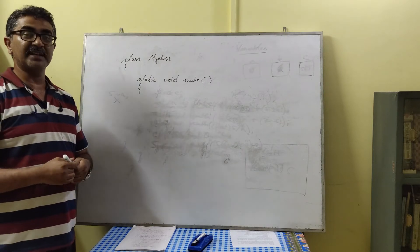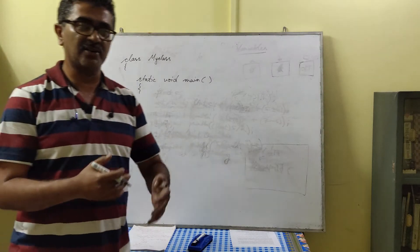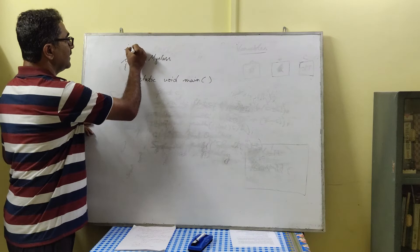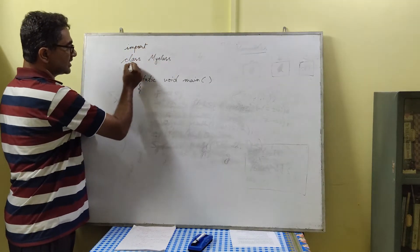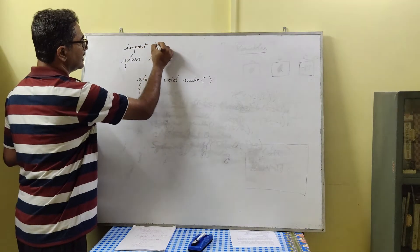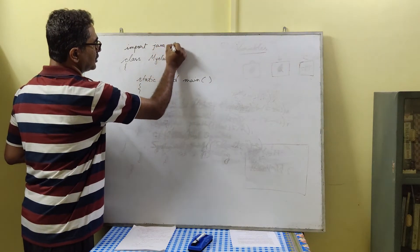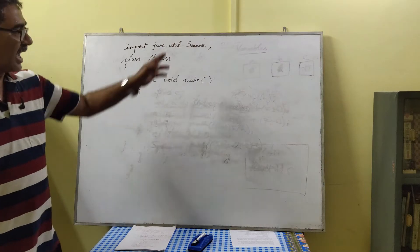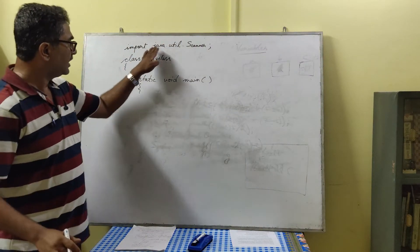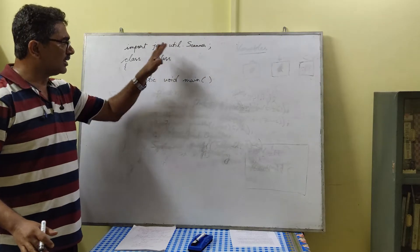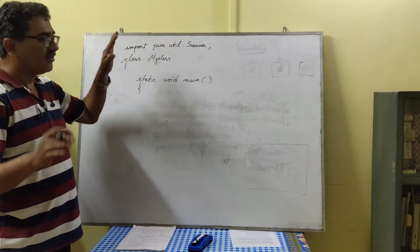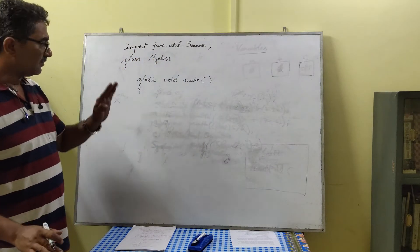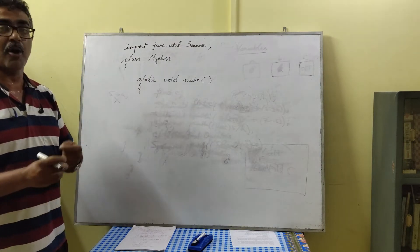To perform any kind of input operation in Java through the keyboard, we need to import a package. We write 'import java.util.Scanner' — note this is written before the class declaration. We'll cover packages in detail later, but currently this import is required for keyboard input. The next step is to create a Scanner type object.